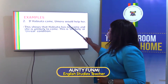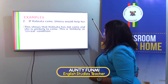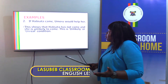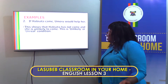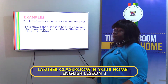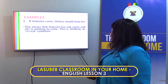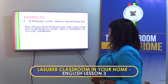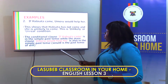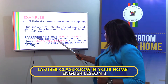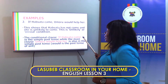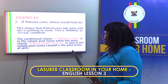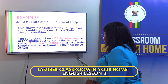'If Absata came, Umori would help her.' This shows that Absata has not come and she is unlikely to come. This is known as the unlikely or unreal condition. The conditional clause 'if Absata came' is in the simple past tense.